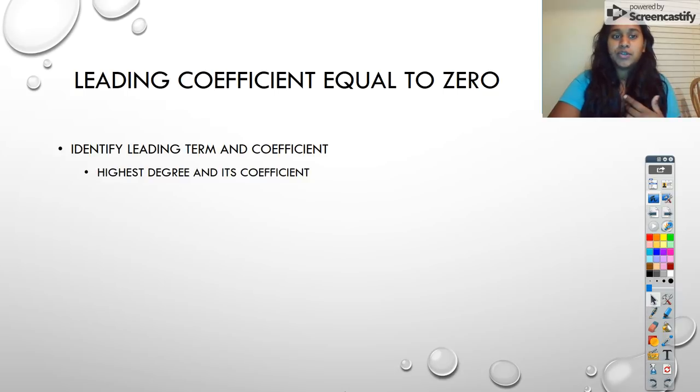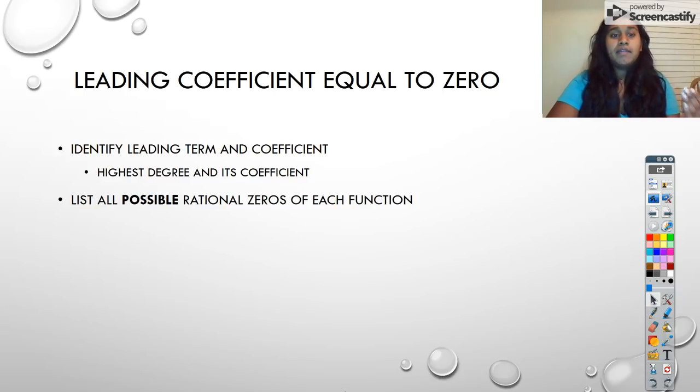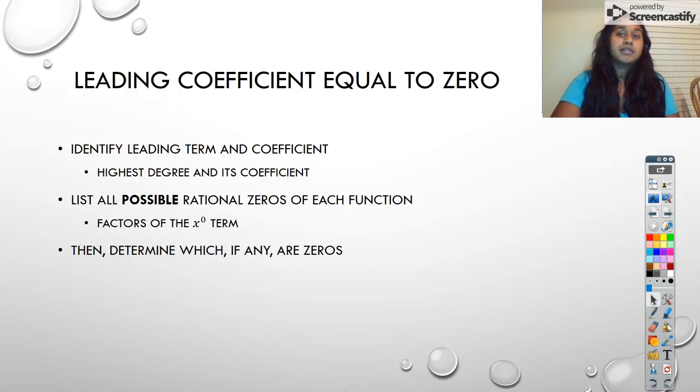The very first thing we have to do is identify the leading term and its coefficient. If it's 1, then you list all possible rational zeros of that function, which are the factors of your x to the zeroth term or your constant term, and then determine which, if any, are zeros.